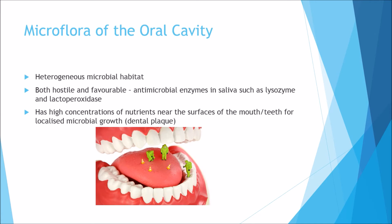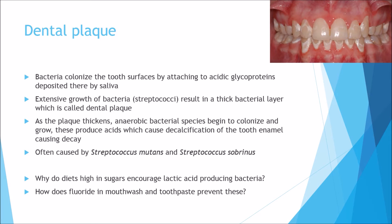One example of this is dental plaque. Bacteria can colonise tooth surfaces by attaching to acidic glycoproteins deposited there by saliva. With extensive growth of bacteria — more particularly Streptococci — you get a thick white bacterial layer called dental plaque. As this gets thicker, anaerobic bacterial species begin to colonise underneath, which can then produce lactic acid, causing decalcification of the tooth and therefore leading towards tooth decay.